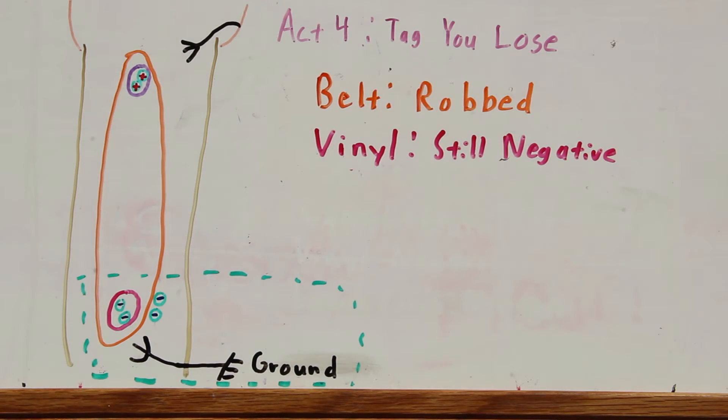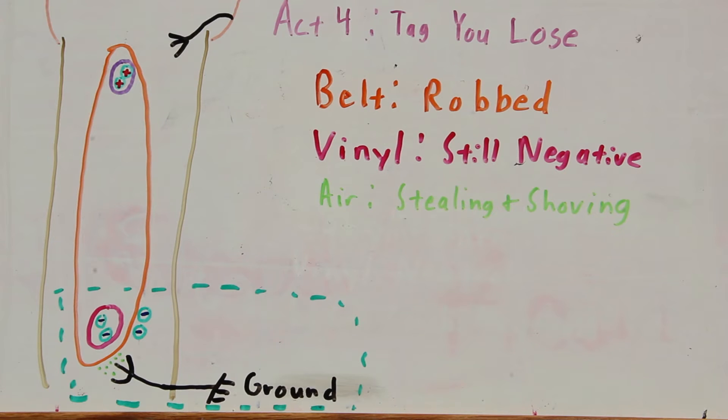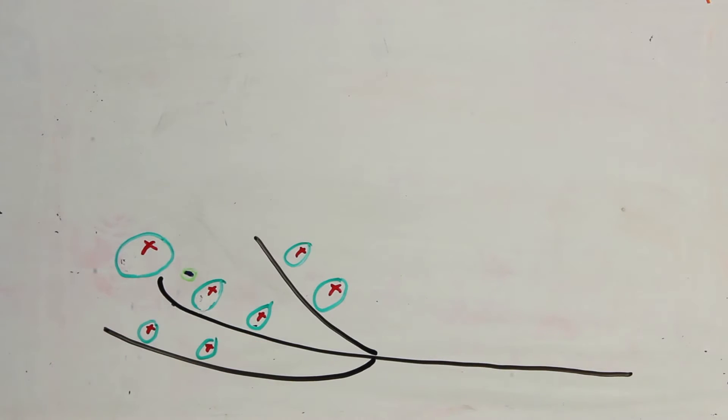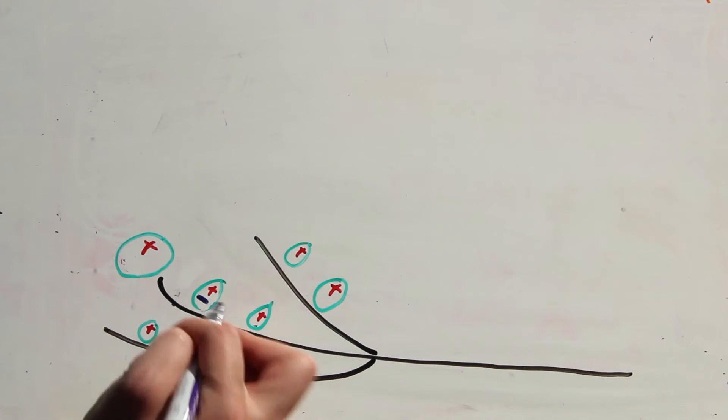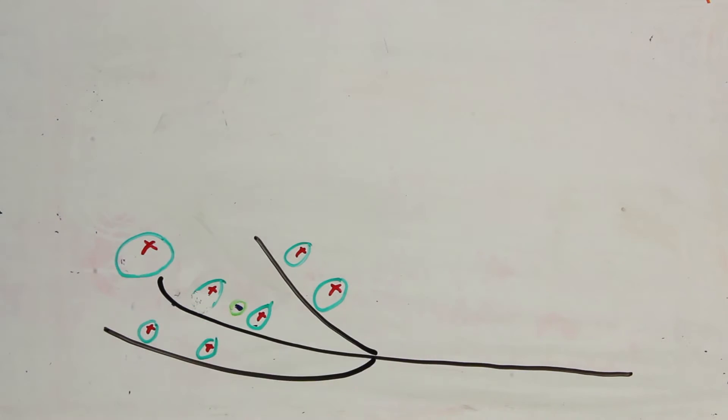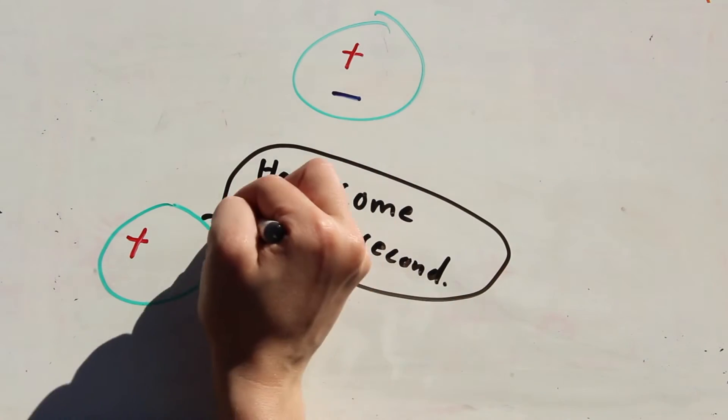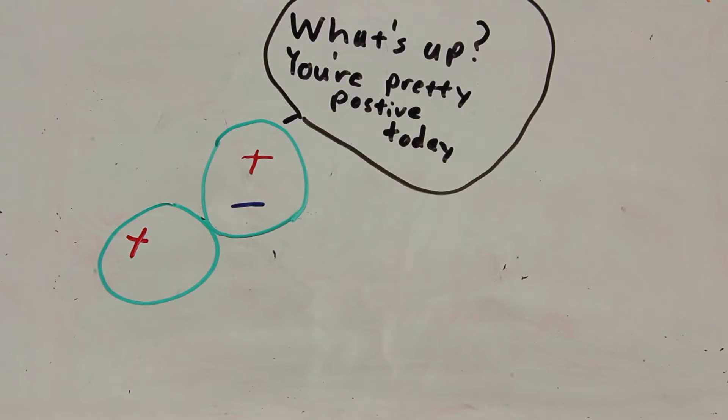There is air molecules between the belt and the comb that are bouncing around and colliding with each other. When a molecule nears the comb, an electron is stolen. This electron moves down the wire to ground. The air molecule is now positively charged and ionized and is bouncing around and colliding with all the other air molecules.